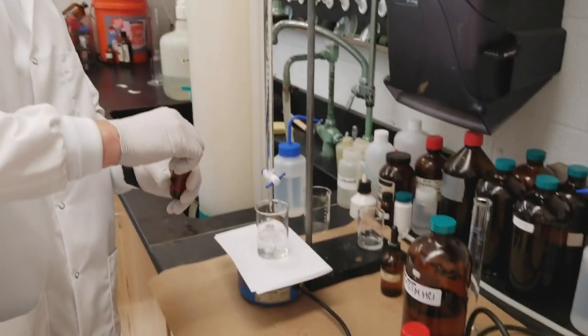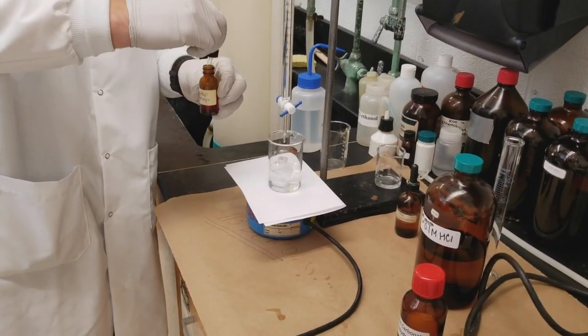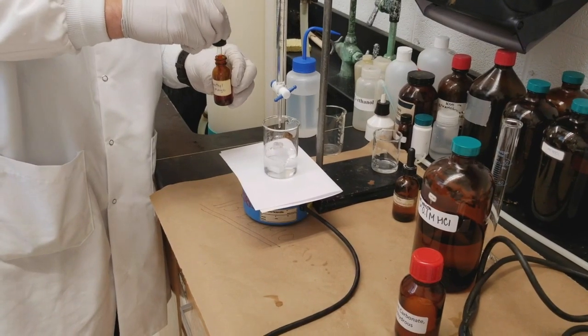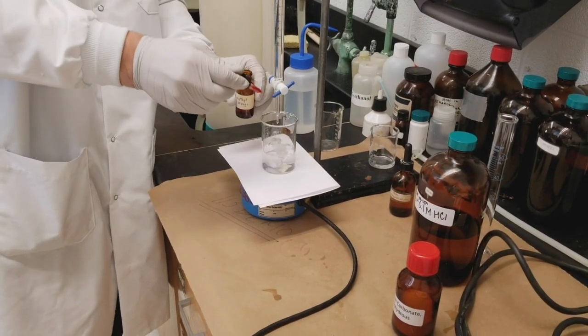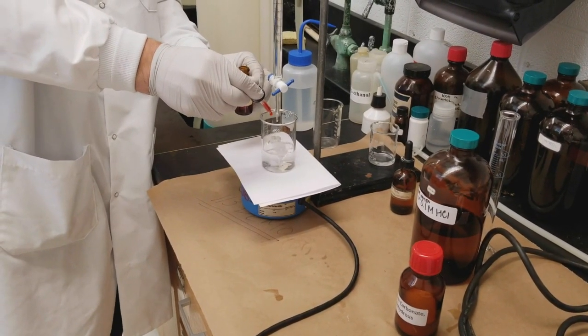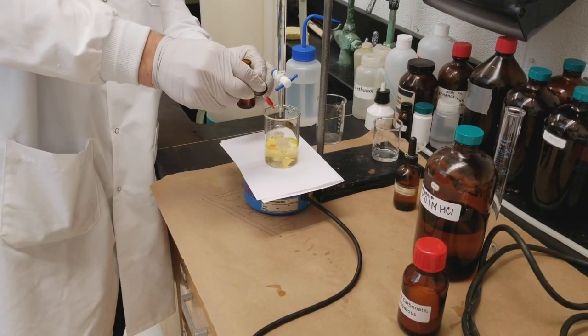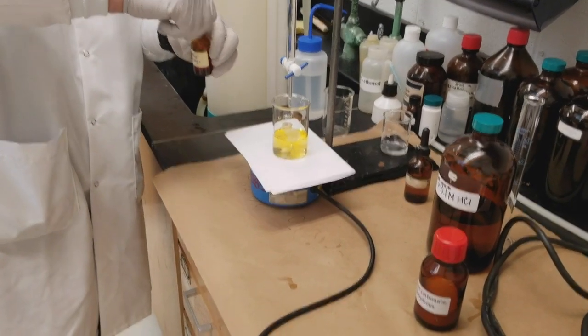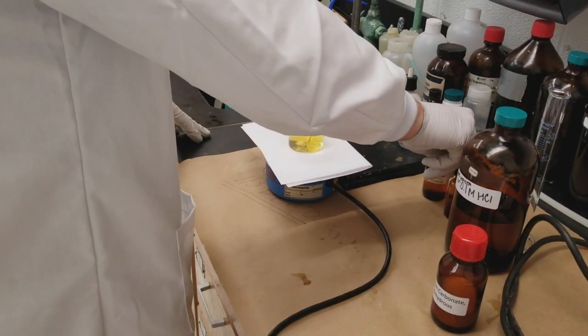Now we're going to take that indicator and we're going to just place again two drops. We want to make sure our solution is still stirring so our indicator gets mixed in very well. So two drops. We're going to see kind of a faint orange color to our solution.